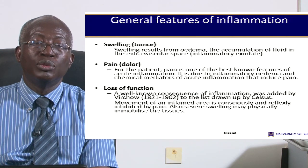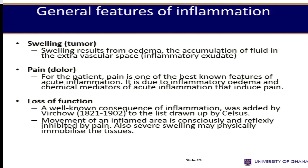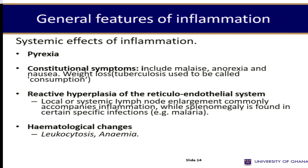Pain is usually due to the edema fluid that goes into the tissues, and some chemicals can also induce pain. The fifth cardinal sign is loss of function — when you have inflammation, you don't use that part which is inflamed. It was added by Virchow, and the movement is restricted either by reflex or because of the pain. Sometimes the inflammatory fluid makes it impossible to move the part. There are also systemic effects including fever, termed pyrexia, constitutional symptoms like malaise, nausea and vomiting, reactive swelling of lymph nodes, high leukocytes, and anemia.